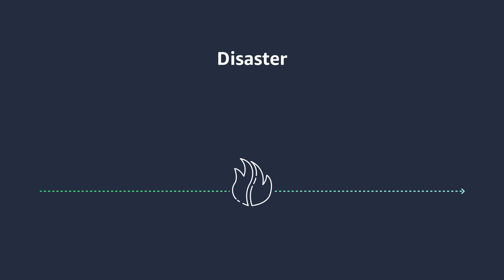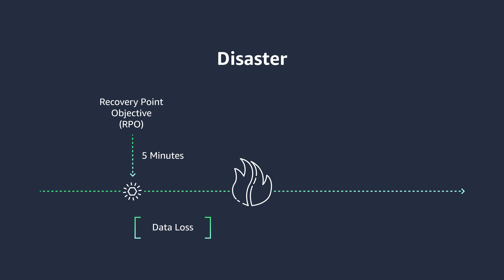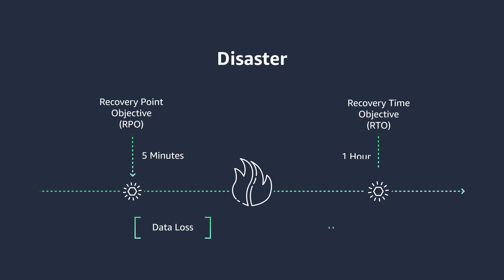In the case of an unforeseen event, you can tolerate a recovery point objective of five minutes and a recovery time objective of an hour. You have regular sales events which significantly fluctuate traffic to your website.